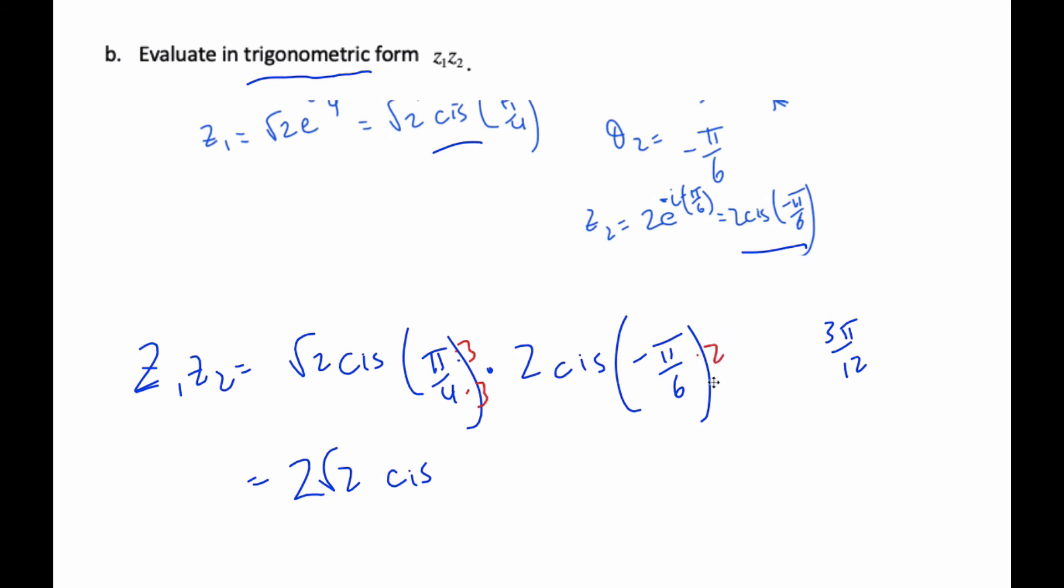this one times 2 and times 2, which will give me negative 2 pi over 12. Subtract that, I get pi over 12, and so the angle is pi over 12.